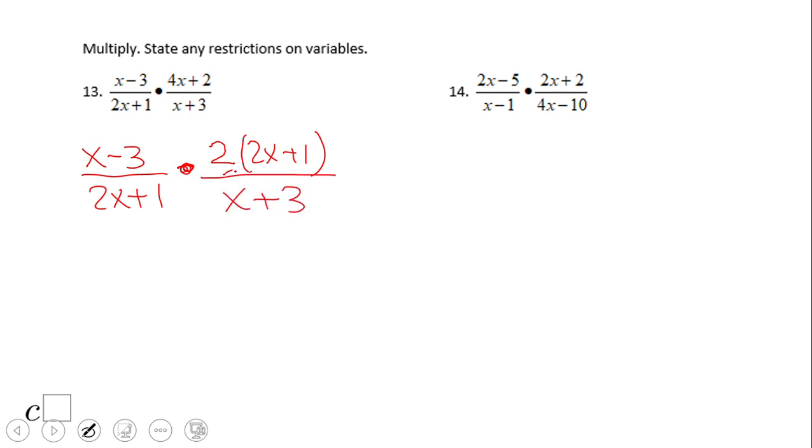If you notice, we have these two guys, we can simplify them, and that's it. The final answer is 2 times the quantity x minus 3 over x plus 3.